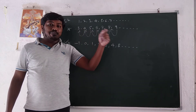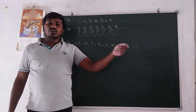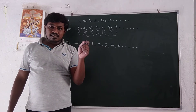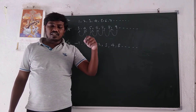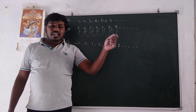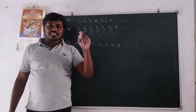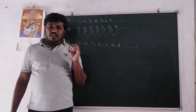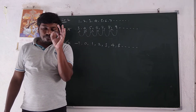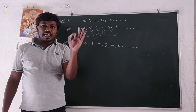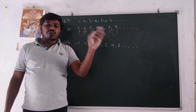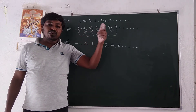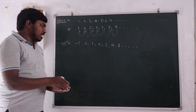What about multiplication and division? If each term of a sequence is multiplied by a non-zero constant, then the resulting sequence is also in AP. That is, if each term of an AP is multiplied by a non-zero constant, then the resulting sequence is also in AP. For example: